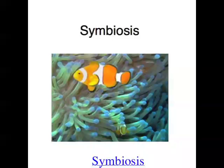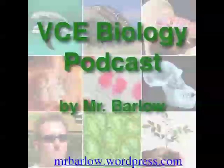Another way that organisms interact is the way that bees or birds act as pollinators for flowers — they take pollen from one flower to another, which helps the plant reproduce. While that's certainly a way organisms interact, it's not an example of symbiosis because the organisms don't live together in a close partnership. And that brings episode 20 of the VCE Biology Podcast to a close. I'm Mr. Barlow, and thanks for listening.